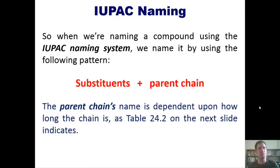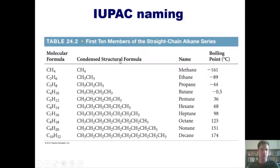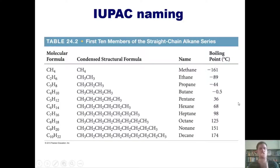When naming a compound using the IUPAC naming system, we use the following pattern: substituent names first, followed by the parent chain name tacked on at the end. The parent chain's name depends on how long it is, as shown in table 24.2. A one-carbon chain is methane, two carbons is ethane, then propane, butane, pentane, hexane, heptane, octane, nonane, and decane.